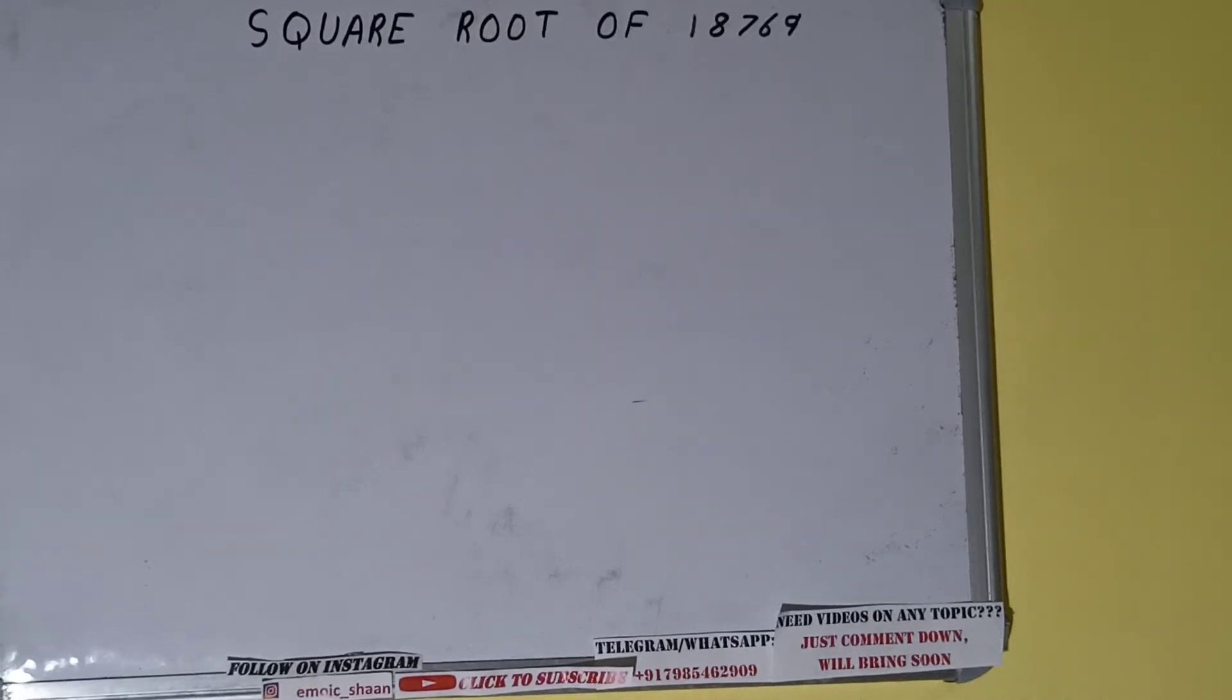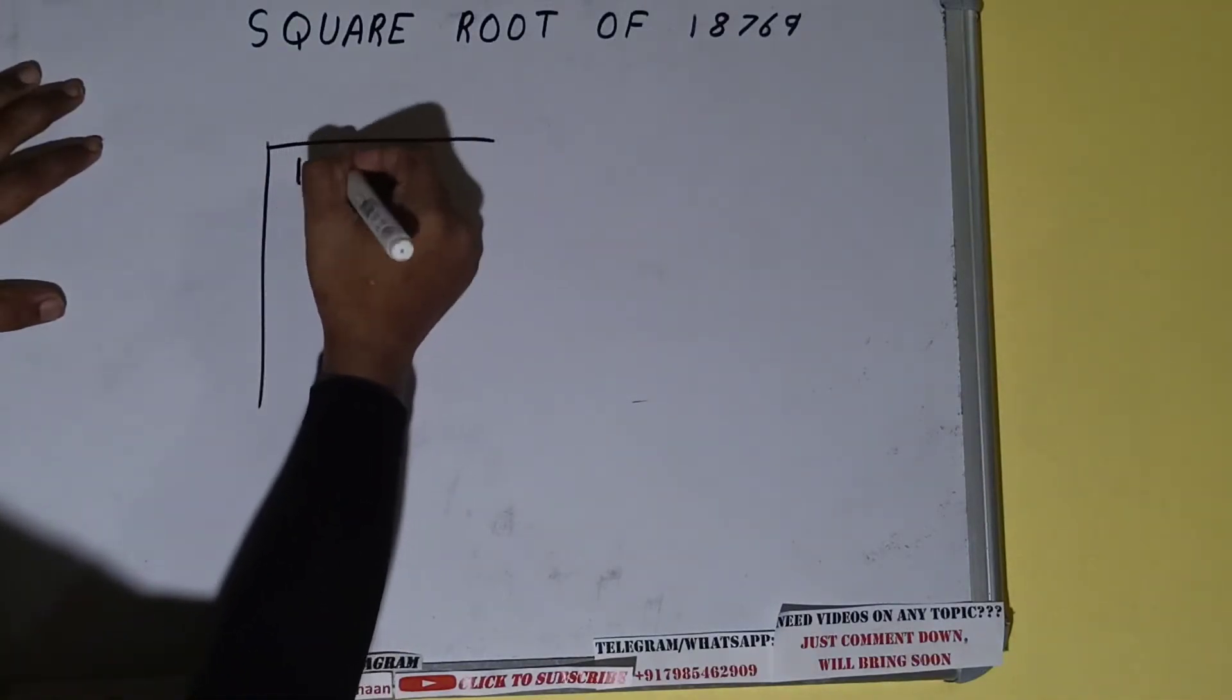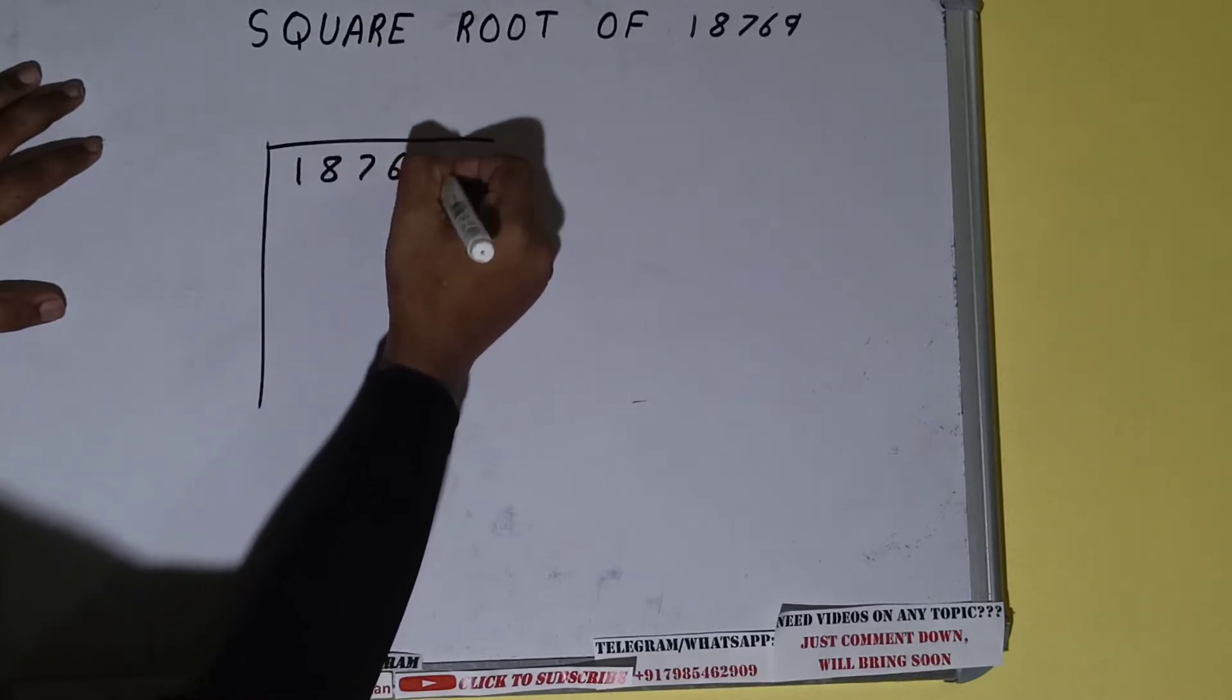Hello friends, and in this video I'll be helping you with the square root of the number 18769. So let's start. First of all, we need to write the number like this: 18769.